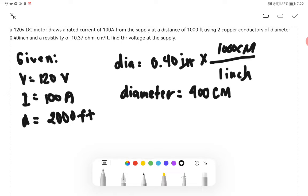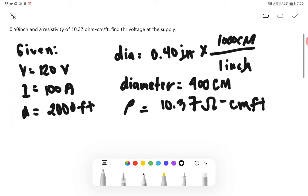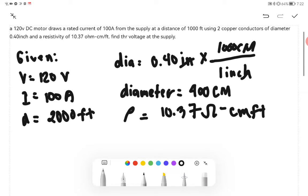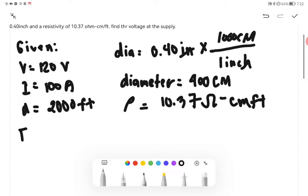We have the resistivity of 10.37 ohm centimeter feet. So what do we have to find? We have to find the voltage at the supply.